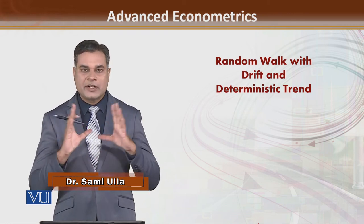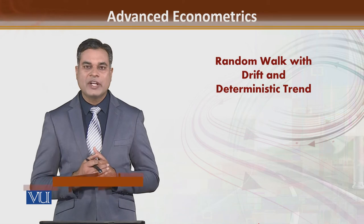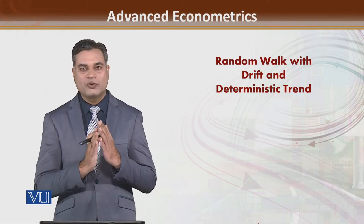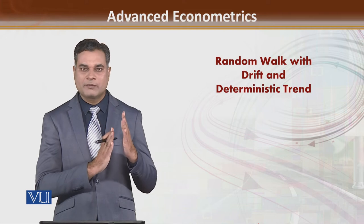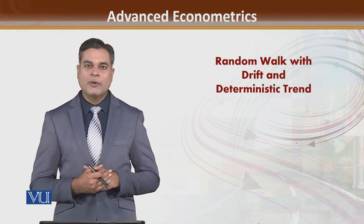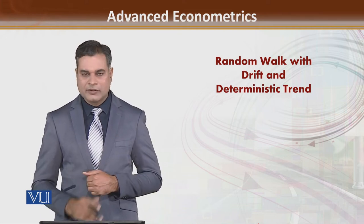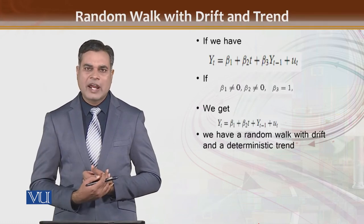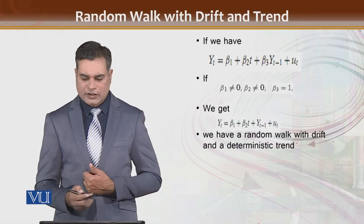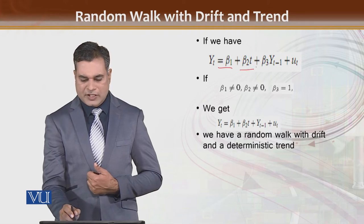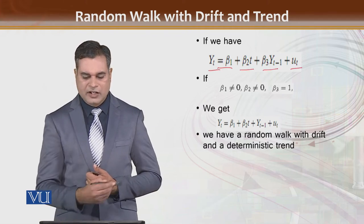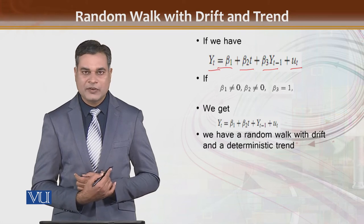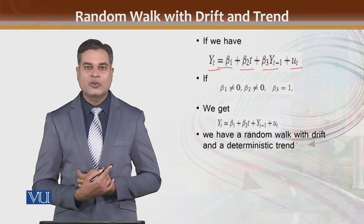Now we are going to discuss a comprehensive model of random walk — what are the possible options. We have three options. In this random walk model we have beta 1, beta 2, and beta 3, plus an error term.